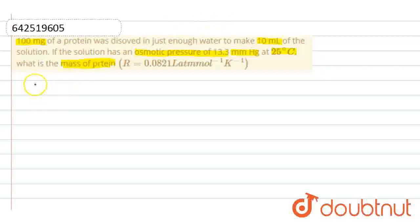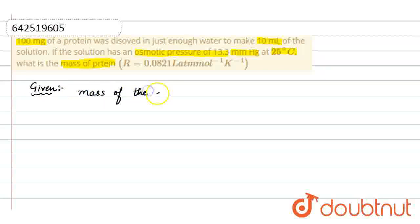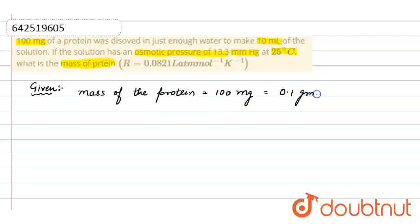The given values are: mass of the protein is 100 mg, and we want this in grams, so that is 0.1 gram. The gas constant value is 0.0821 liter atmospheric per mole per kelvin.